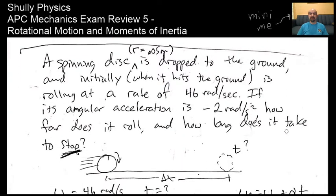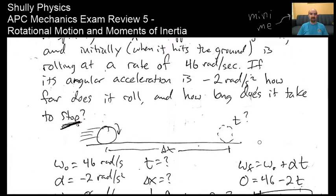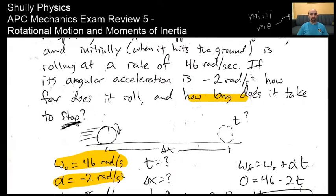Here's an example. A spinning disk with a radius of half a meter is dropped to the ground and, when it hits, is rolling at 46 radians per second. Its angular acceleration is negative 2 radians per second squared. How far does it roll and how long does it take to stop? So we have an initial rolling speed of 46 radians per second and we need to find time and displacement.